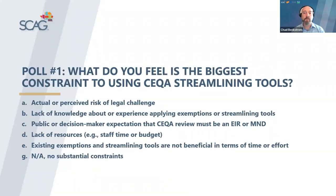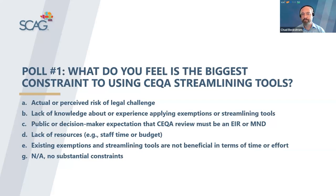We want to start out with a poll: what's the biggest constraint to using CEQA streamlining tools? Do you fear legal challenge? Is it a lack of knowledge or understanding by staff or decision makers? Do you lack the resources necessary to implement some of these tools? Have you found streamlining does not work for you? Or maybe you're using some of these with overwhelming success. The results show a large majority chose option C — public decision maker expectations that CEQA review must be an EIR or MND. So maybe we can help you help them change some of those expectations.